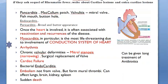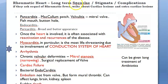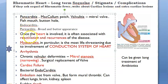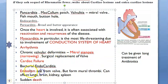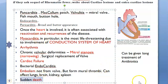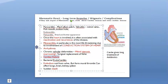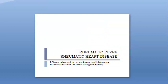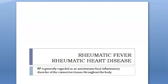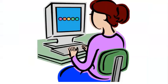Long-term complications of rheumatic heart disease include pancarditis, arrhythmias, mitral stenosis, cardiac failure, and embolism — not from valves but from mural thrombi — affecting all organs. Sudden death can occur due to cardiac failure or embolism. That concludes our discussion of rheumatic fever, rheumatic heart disease, and all extra-cardiac lesions.